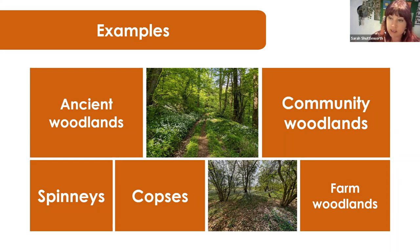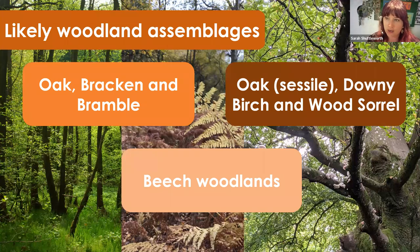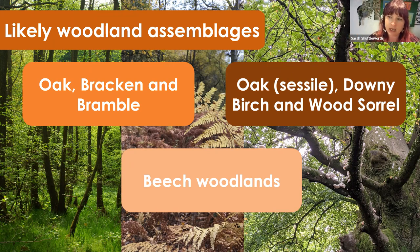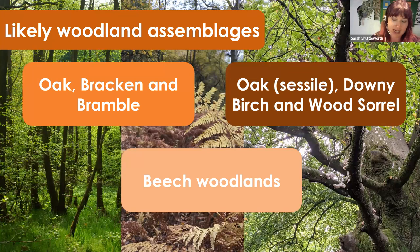A farm woodland specifically grown for shelter using broadleaved species can be included, and the same with community woodlands or mitigation for development — if there are native broadleaved species and it's been done for the benefit of wildlife, you can still include it. Generally speaking you can sort of lump dry deciduous into three categories: oak, bracken and bramble is one typical habitat type — that doesn't mean you only have those three species, it means those are some of the main elements.